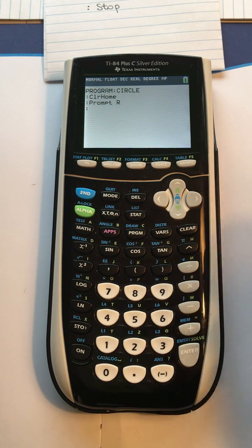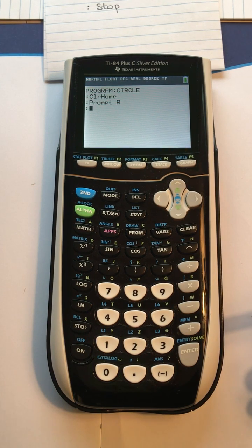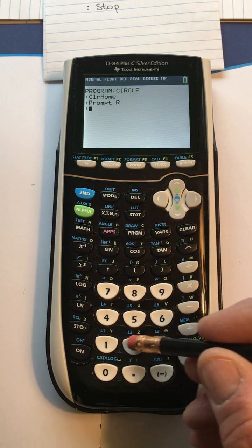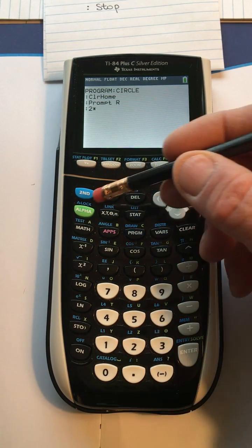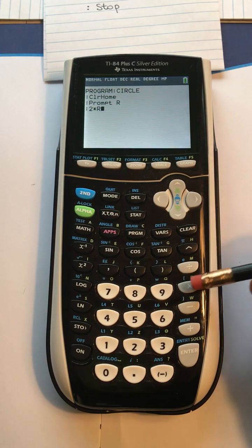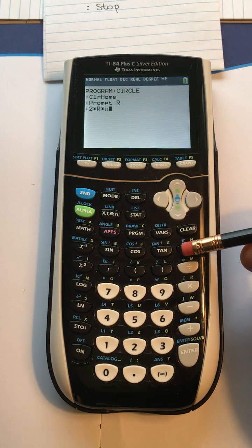Now we want to tell the calculator to do the calculation. Not always all calculators require a multiplication, but we'll do that for emphasis. So it's going to be two times the radius, so that's alpha R times pi, and that second pi is on the calculator there, and we want to store it in a variable so that we can display it.